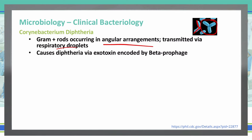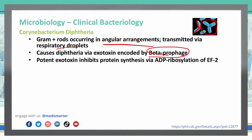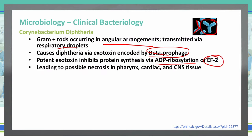How it causes diphtheria is via an exotoxin, and that exotoxin is encoded by a beta-prophage. That's something to remember about Corynebacterium diphtheriae — it is a beta-prophage exotoxin. The exotoxin inhibits protein synthesis by ADP ribosylation of EF-2, elongation factor 2, and this leads to possible necrosis in the pharynx, cardiac muscle, and CNS tissue.